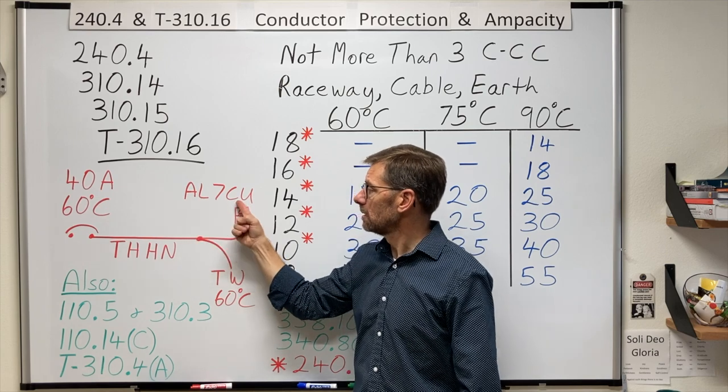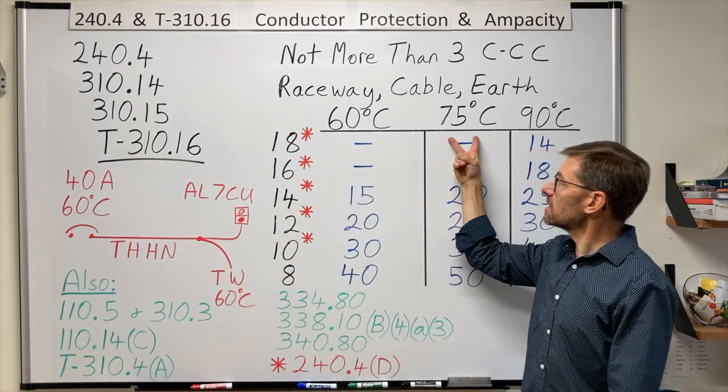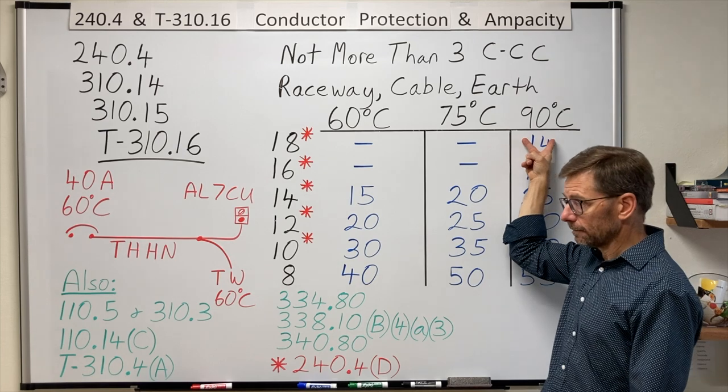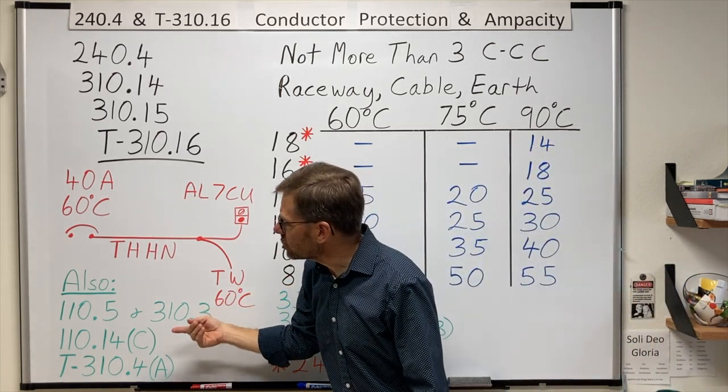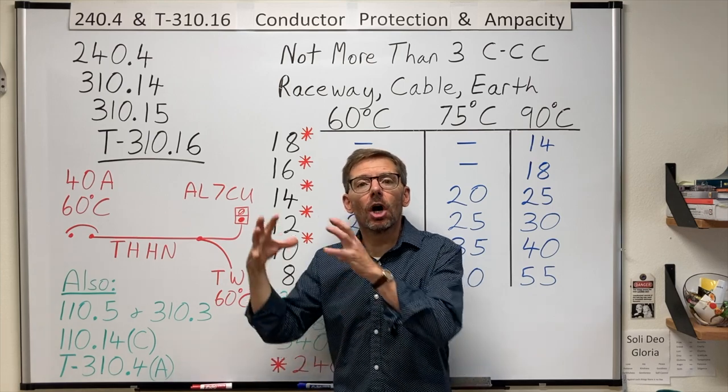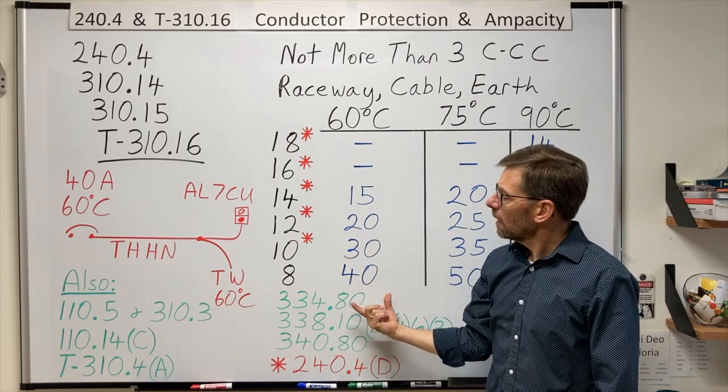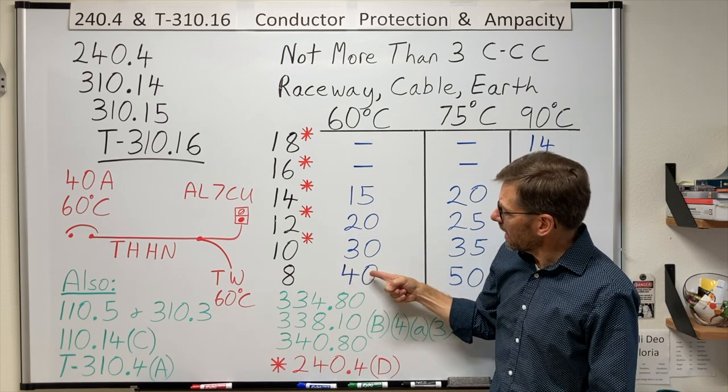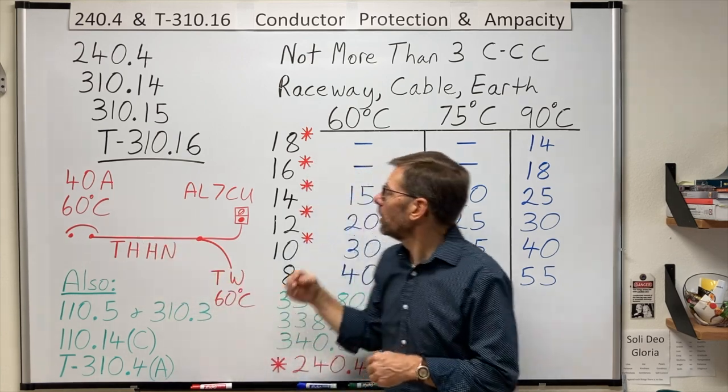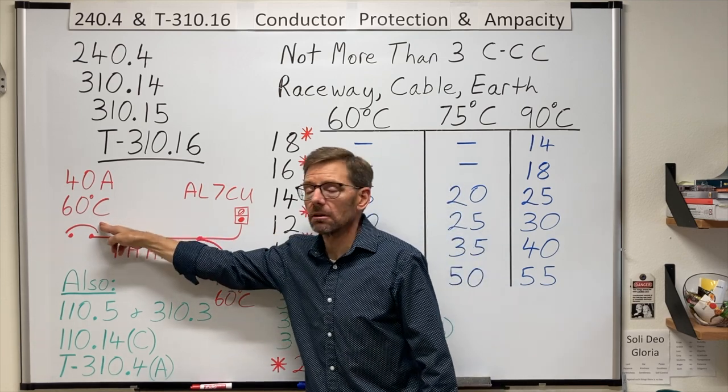And there's a number in there. A 7 would indicate it's rated for 75 degrees Celsius. And a 9 would indicate 90 degree rating. Now, there is a general rule in 110.14c1a that says for conductors 100 amps and less, you're limited to the ampacity in the 60 degree column. Which would mean here that 40 amps I'd need a number 8. And if I did that, I put a number 8 in there. That conductor, because it has more copper in it, would not get as hot. And therefore, it couldn't overheat the connected terminations conductor device.